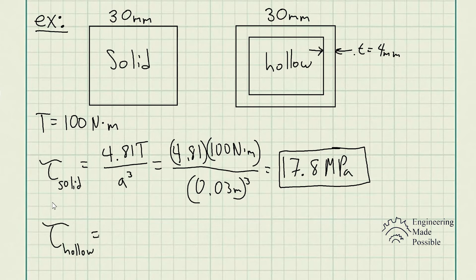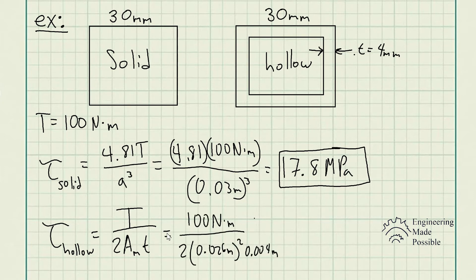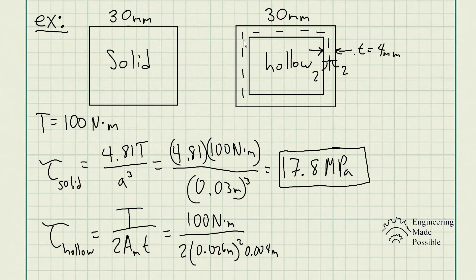For the hollow shaft we use τ_avg = T / (2 · A_m · t). The mean cross-sectional area uses the centerline dimensions: with t = 4 mm, each side is offset by 2 mm inward, giving a mean side length of 26 mm. So A_m = 0.026 m × 0.026 m, and t = 0.004 m. Plugging in: 100 / (2 × 0.026² × 0.004) = 18.5 MPa.